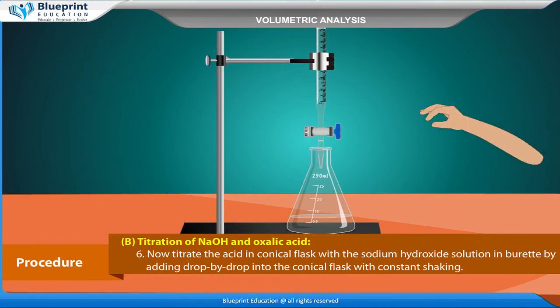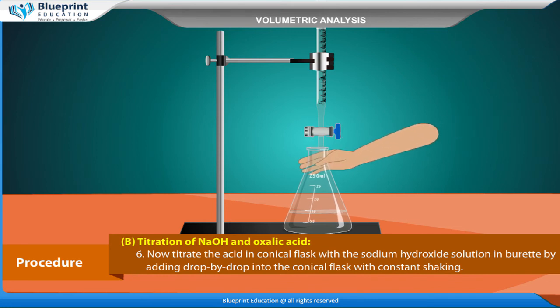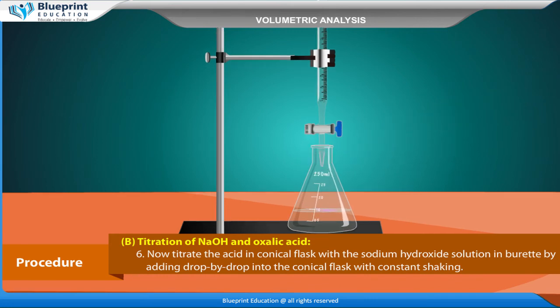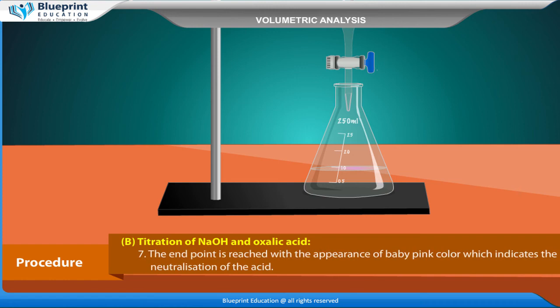Now, titrate the acid in conical flask with the sodium hydroxide solution in burette by adding drop by drop into the conical flask with constant shaking. The end point is reached with the appearance of baby pink color which indicates the neutralization of the acid.